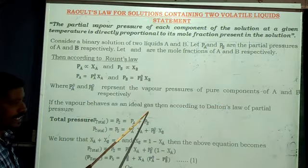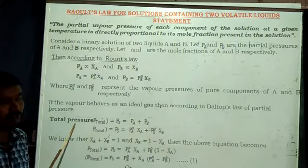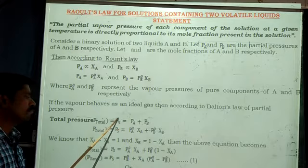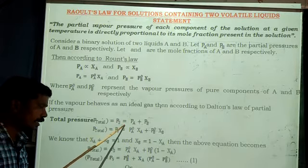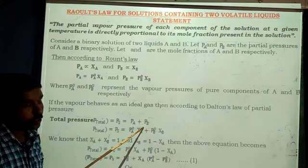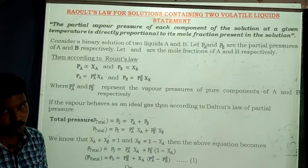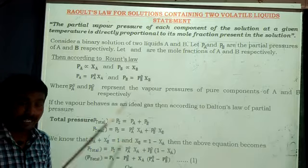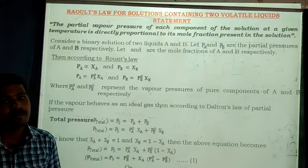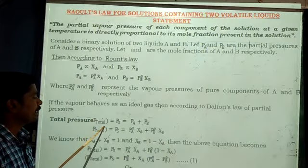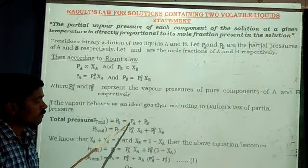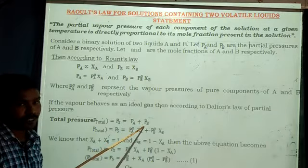If the vapor behaves as an ideal gas, then according to Dalton's Law of partial pressures, the total pressure of the system — the total pressure of the solution — equals the partial vapor pressure of the solvent plus the partial vapor pressure of the solute. According to Dalton's Law, the total vapor pressure equals the sum of the partial pressures of individual components. So: P_total = PA + PB.